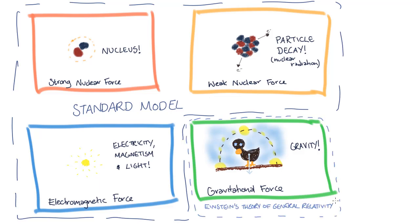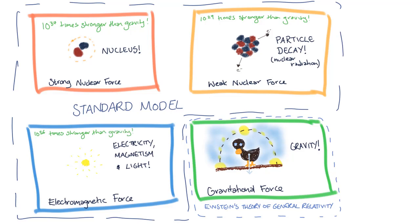Another thing that's odd about gravity is just how weak it turns out to be. You might not believe this if you've ever tripped and fallen, but gravity is much weaker than the other fundamental forces. If we zoom down to the scale of protons and neutrons, the strong nuclear force is 10 to the 37 times stronger than gravity, the weak nuclear force is 10 to the 29 times stronger than gravity, and the electromagnetic force is 10 to the 36 times stronger than gravity.